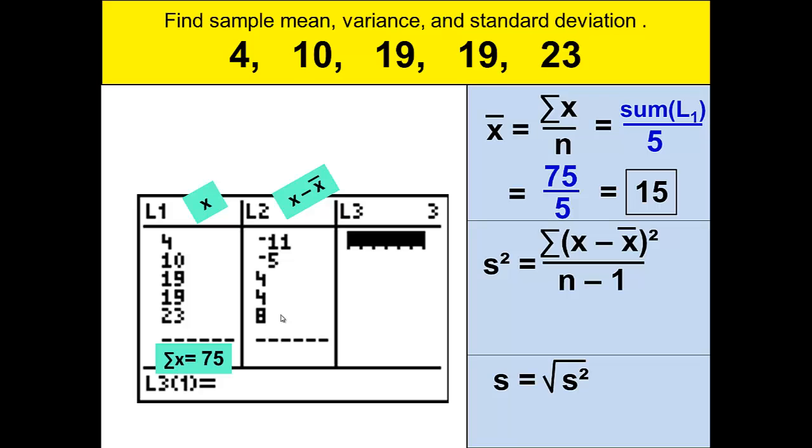Now, back to the formula and the order of operations. We have computed the subtraction in the parentheses. Now we're ready for the exponent, the square. So we need to take the numbers we just got in list 2 and square each of those values. Again, not by hand, but by using a formula.